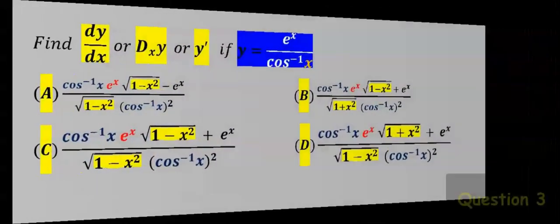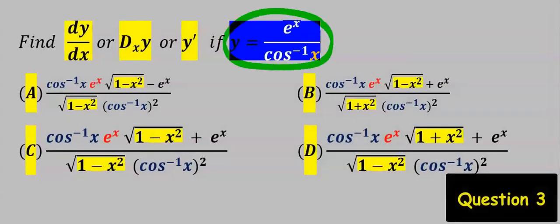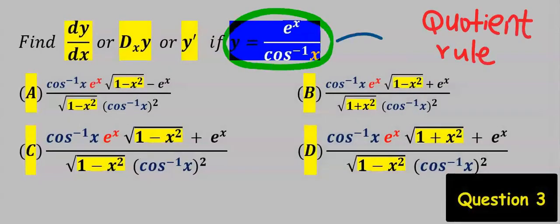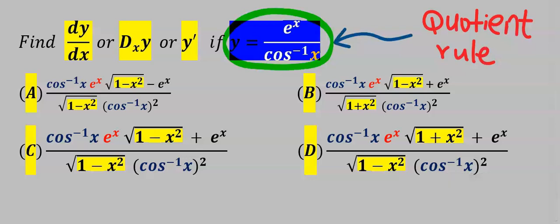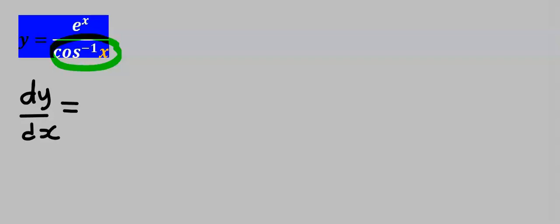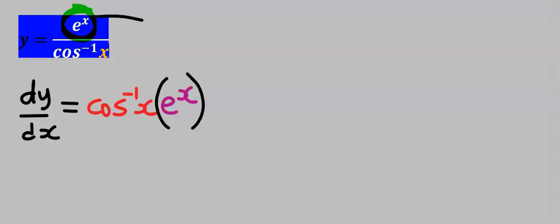Next let's find the derivative of this function. For dividing functions we're going to apply the quotient rule. To find dy/dx we start with the denominator by keeping it constant, then differentiate the numerator. If you differentiate exponential x you get exponential x. For dividing functions we use a minus sign.